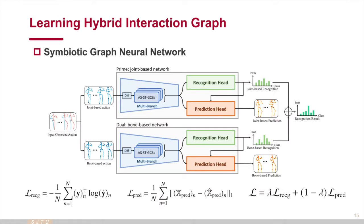The entire model, symbiotic graph neural network, has two parallel networks which takes different input representations: joint-based features and bone-based features. Each network achieves action recognition and motion prediction at the same time. The recognition head delivers the soft label to enhance motion prediction. The prediction head preserves detailed information to improve action recognition as well. Here is the loss function.